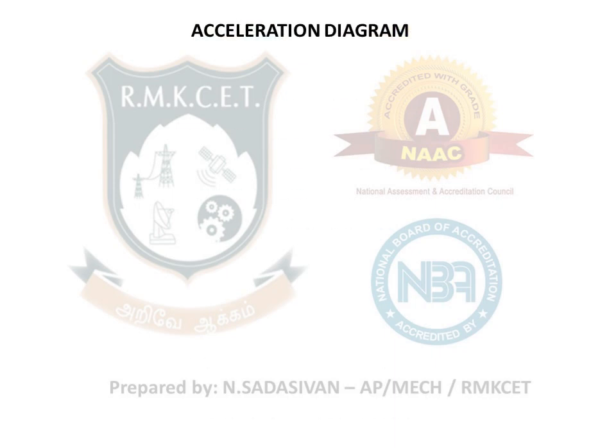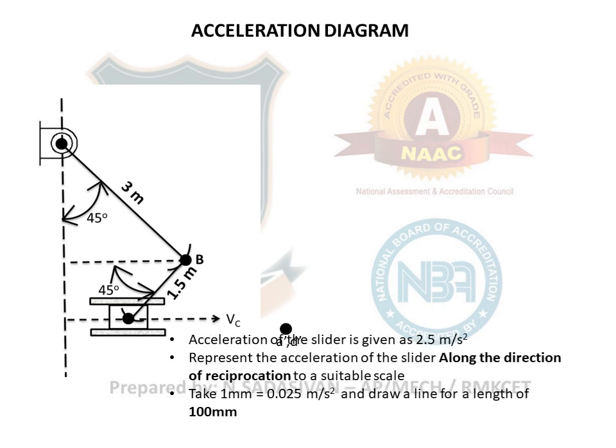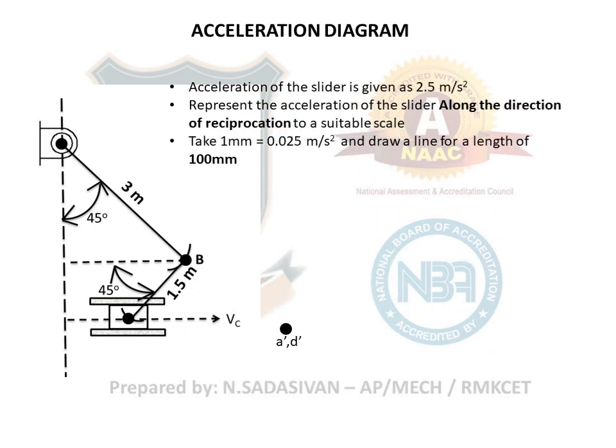Now it is time to do the acceleration diagram. Take the configuration diagram for reference. Start from the fixed point A-dash, D-dash. The acceleration of the slider is given as 2.5 m/s² towards the right. Use a scale of 1 mm equal to 0.025 m/s² so that 2.5 m/s² is represented by a 100 mm line - this makes results readable when you measure from the diagram. Represent the slider acceleration as a 100 mm horizontal vector. Mark it as a-dash to c-dash.